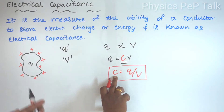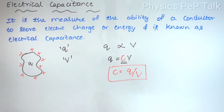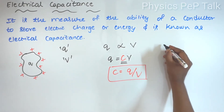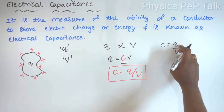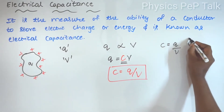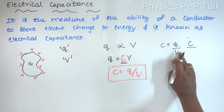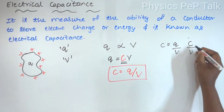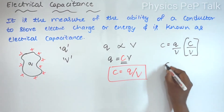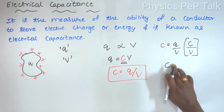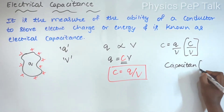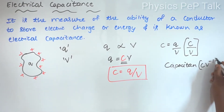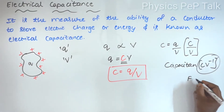That is the meaning of electrical capacitance. Now for the SI unit: C is equal to Q by V. The SI unit of charge is coulomb, and the SI unit of potential is volt. So the SI unit of capacitance is coulomb per volt, which is also called farad.